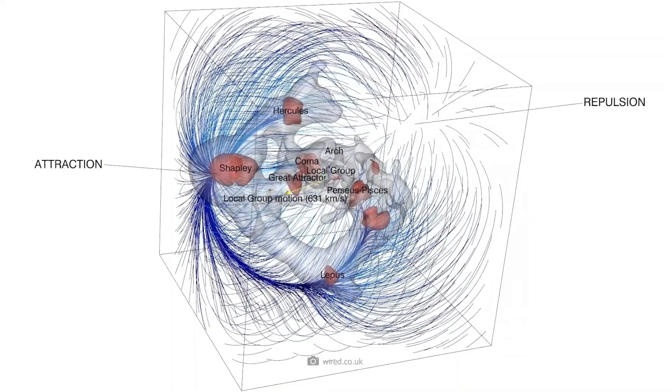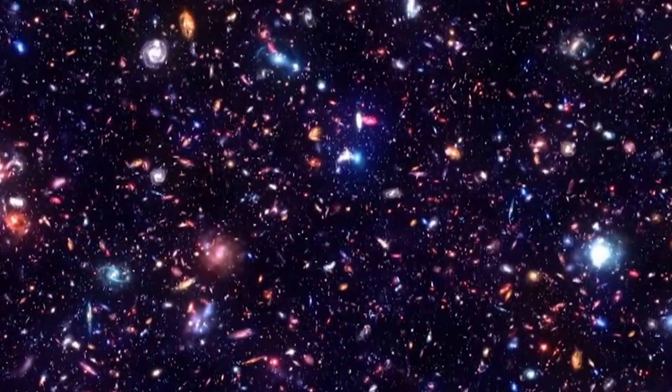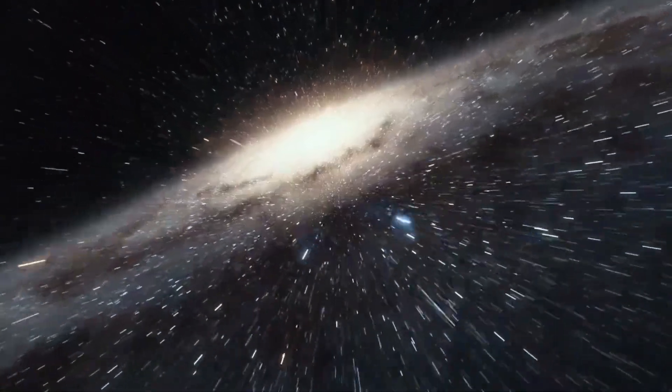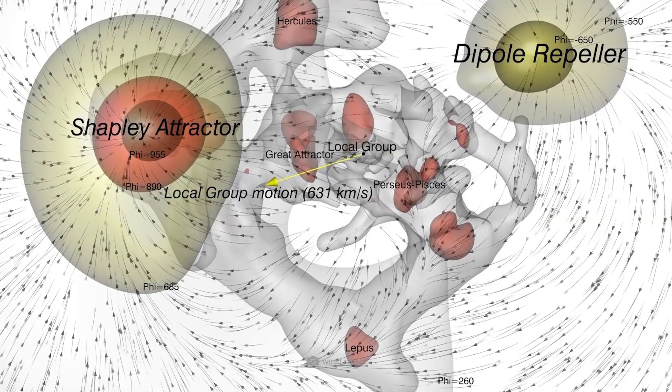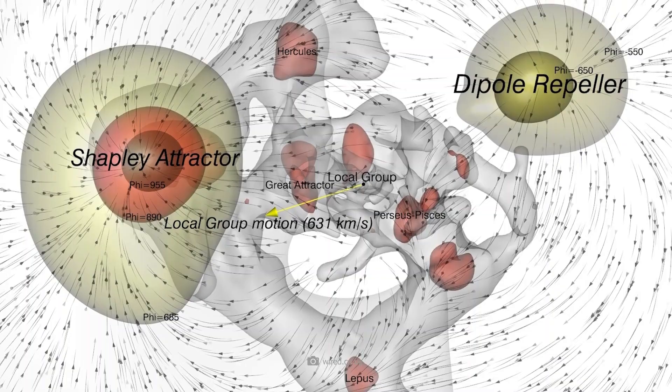Voids were first discovered in the 1970s by astronomers observing the distribution of galaxies in the universe. They noticed regions in which galaxies were completely absent, or only very thinly distributed. The best known of these is the Boötes void, named after the constellation of the same name, Boötes.